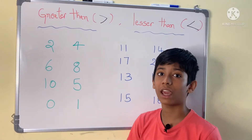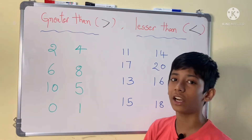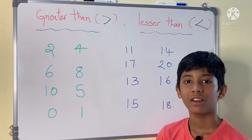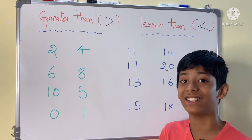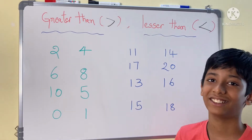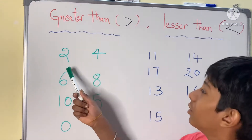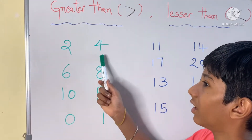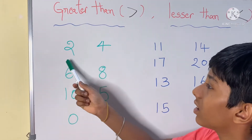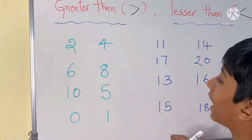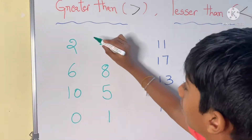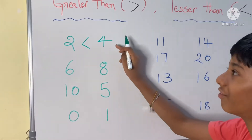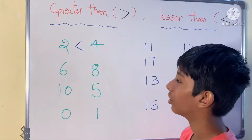Good morning students! Today we are going to learn about greater than and lesser than. Let's get started. Where we use greater than and lesser than — let's learn. So two and four: which is bigger and which is smaller? Four is big and two is small, so two is lesser than four.